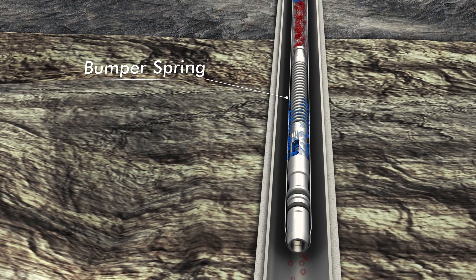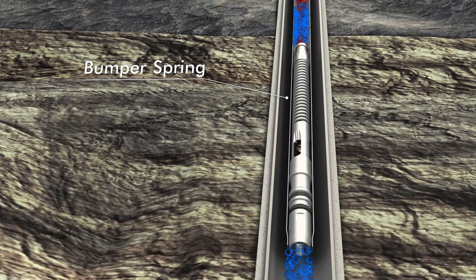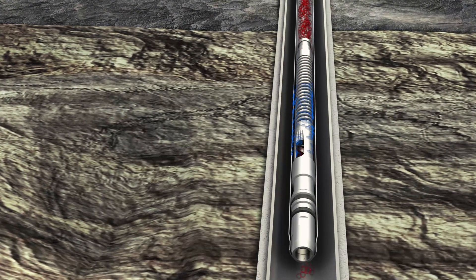At the bottom of the tubing string, a heavy-duty bumper spring assembly is installed to absorb the force of the falling plunger.